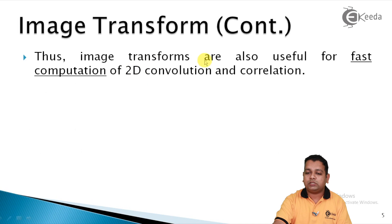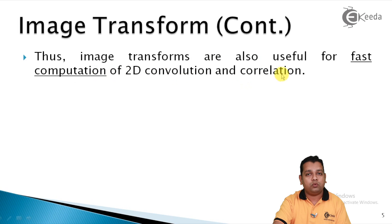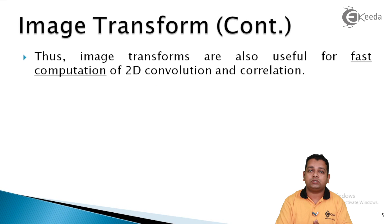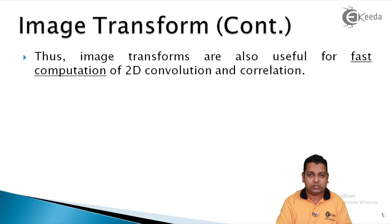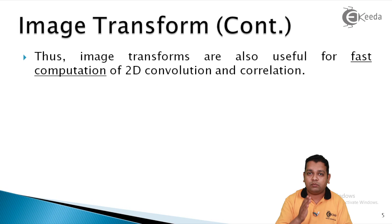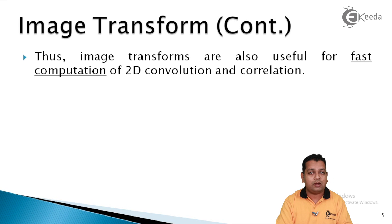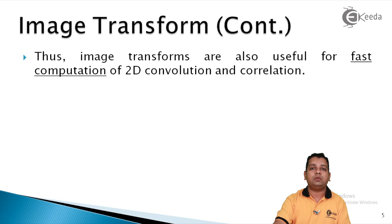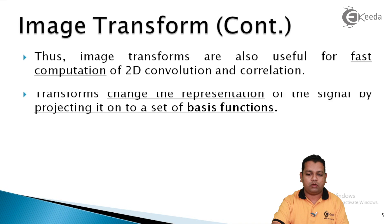Image transforms are also used for the fast computation of processes like 2D convolution and correlation. In digital signal processing, it was easy working with only one-dimensional signals. Now the information signal is image data — two-dimensional. As one dimension has been added, the complexity increases, and that can be made easier with the help of image transforms.